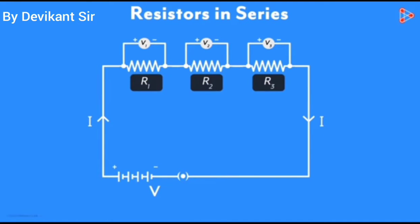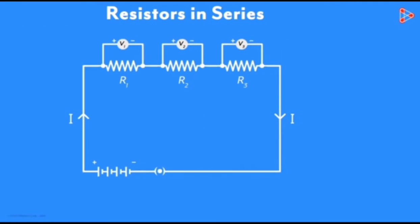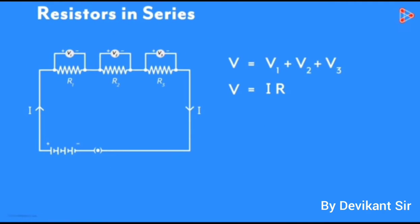Now let us consider the total resistance of series combination R1, R2 and R3 as capital R. Total current flowing through circuit is capital I. Therefore by Ohm's law we can say that V equals to I into R. Now voltages across each resistances R1, R2 and R3 will be V1 equals to IR1 and similarly V2 and V3 equal to IR2 and IR3 respectively.